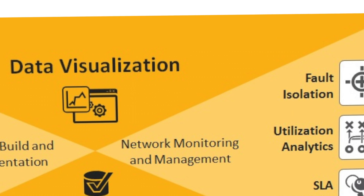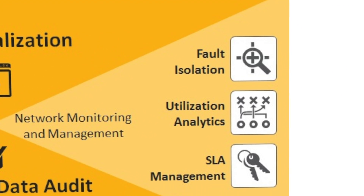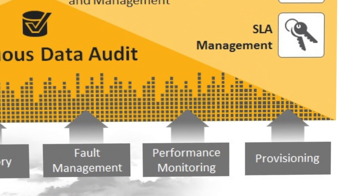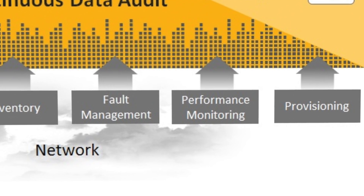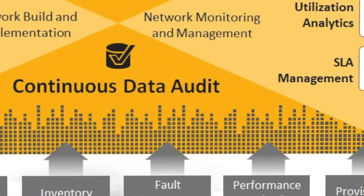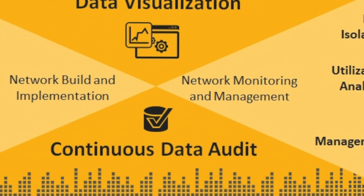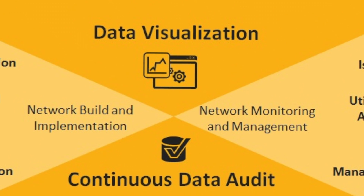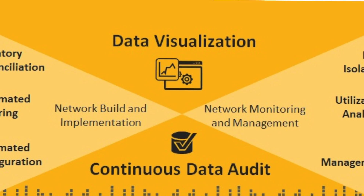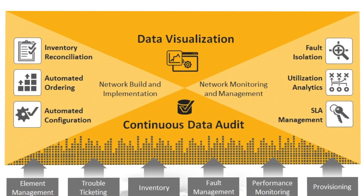This includes automated provisioning of the network elements themselves right through turn up test. The third part of service orchestration is dynamic off-net service monitoring — you need to be able to accurately sectionalize faults between you and your access vendor, and conduct extensive performance monitoring to determine if the access vendor is meeting their service level agreements. Finally, intercarrier service orchestration needs to provide end-to-end visualization of the status of all Ethernet transport services, including both the on-net and off-net portions provided by third parties.